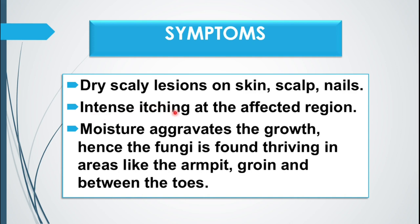The fungi can proliferate in the presence of moisture and warmth. Areas like the armpits, the groin, and between the toes have maximum sweating and temperature, making these three areas where fungal attack is maximum. These are the three typical symptoms and affected regions of ringworm.